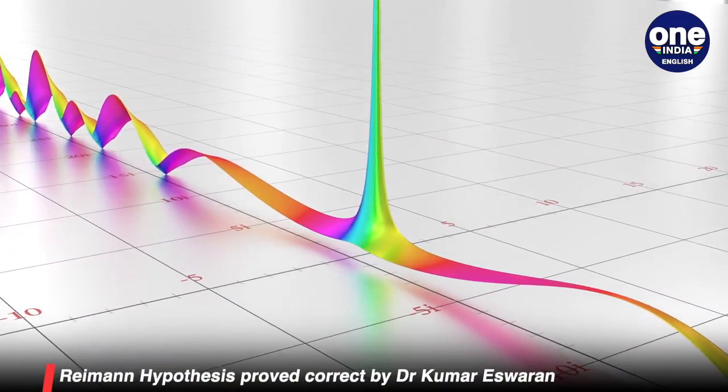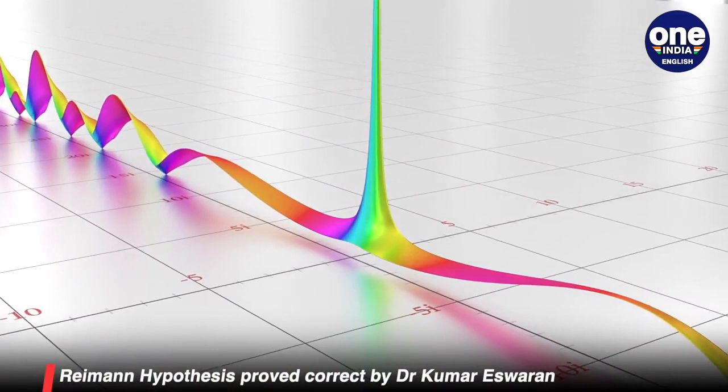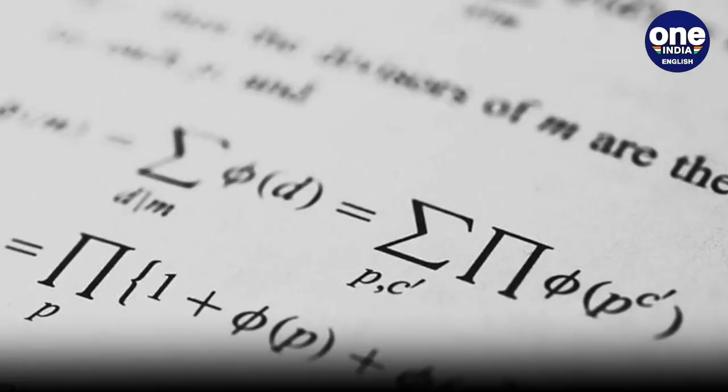The Riemann Hypothesis was declared a millennium problem in the year 2000 by the Clay Mathematics Institute of Cambridge. Anyone who solves it stands to win a $1 million prize.